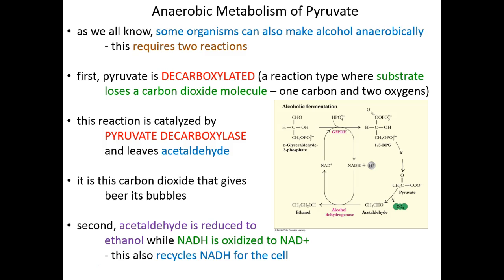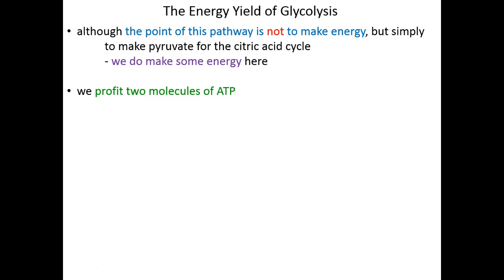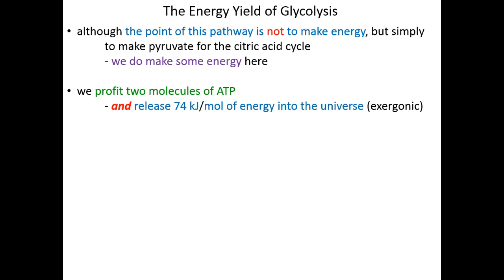We are once again recycling NADH back to NAD+ so it can go to step 6 of glycolysis and keep glycolysis running. The reduced form of acetaldehyde is ethanol — we actually spoke about this reaction way back in our first redox reaction lecture as one of our biochemical examples. Acetaldehyde gains two protons and two electrons, converting it into ethanol. To move finally to the energetics of glycolysis: although the point of glycolysis is not to make direct usable energy but instead to yield pyruvate for the citric acid cycle, we do make some energy from glycolysis. We profit two molecules of ATP when we do glycolysis aerobically — a good yield.